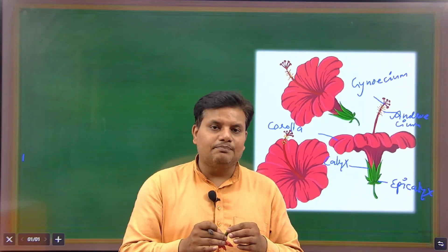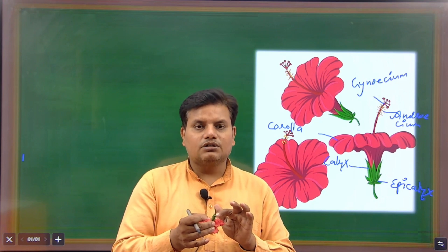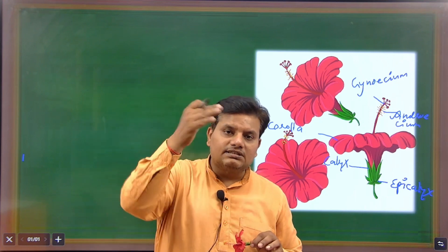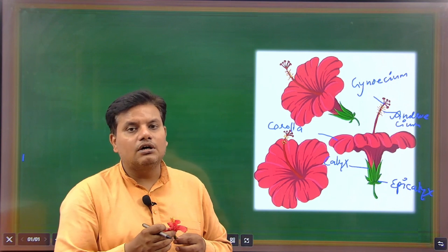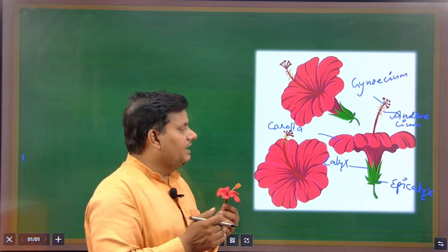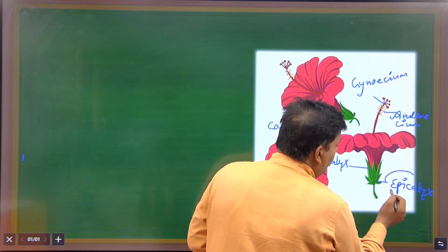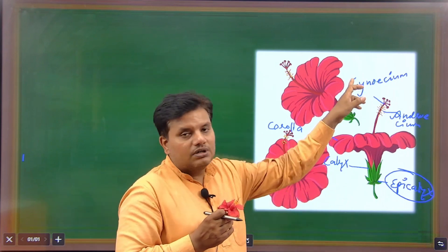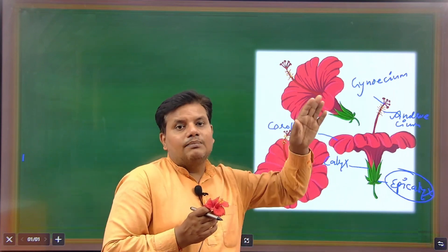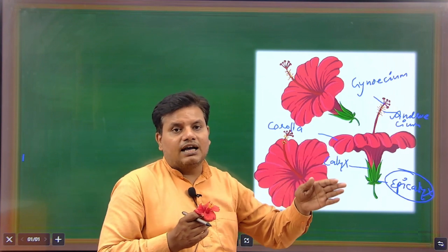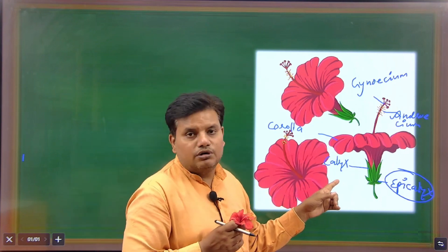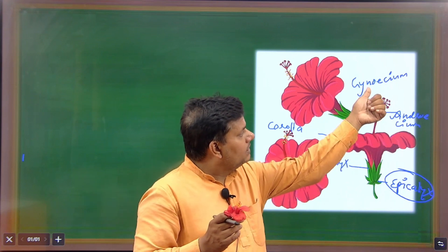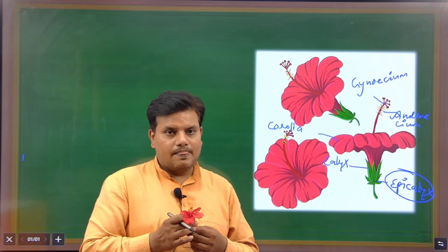Only the hibiscus family has five parts: Epicalyx, Calyx, Corolla, Androecium, and Gynoecium. Other dicot plants have only four parts — Epicalyx is not found in them. They start from Calyx to Gynoecium. All bisexual flowers of dicot plants have only four parts: Calyx, Corolla, Androecium, and Gynoecium.